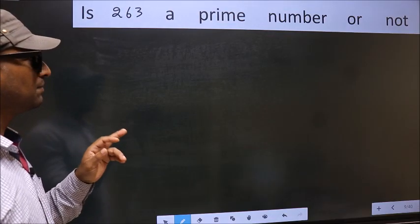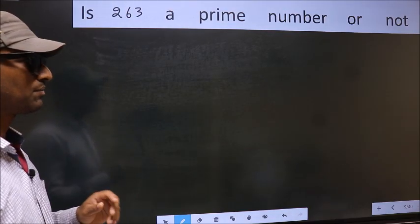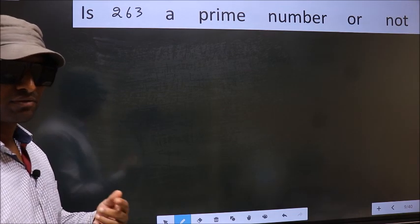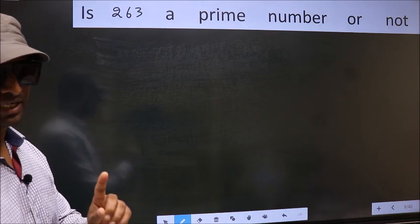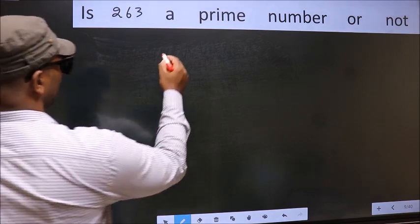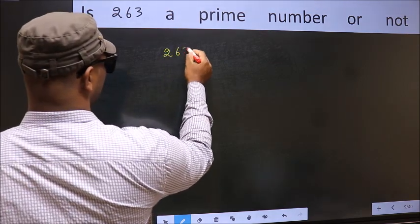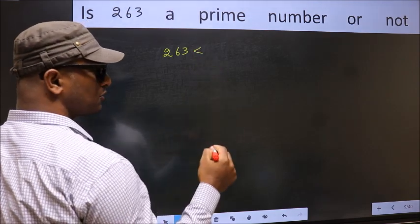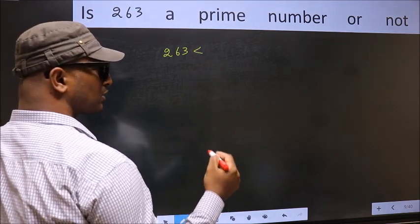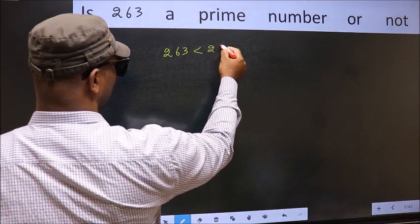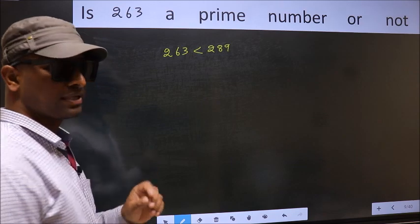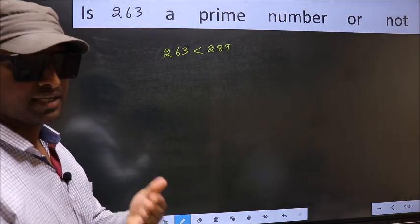Is 263 a prime number or not? To check whether the given number is prime or not, step 1: the given number 263 is less than and close to which perfect square number is 289. This is your step 1.